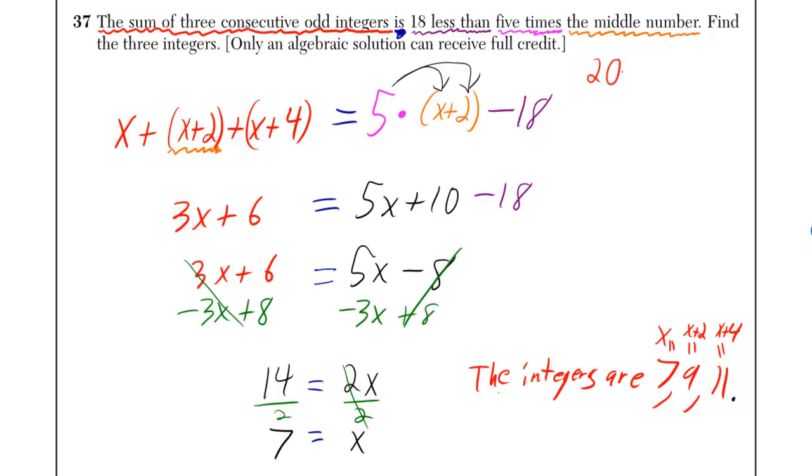Yo, if someone walked up to you and they said, what's 18 less than 20? You'd be like, 20 minus 18. You would not be like, 18 minus 20 is negative 2. That ain't the right answer. Someone starts with 20 bucks, and then they say, what's 18 less than 20 bucks? You got to tell them 2.